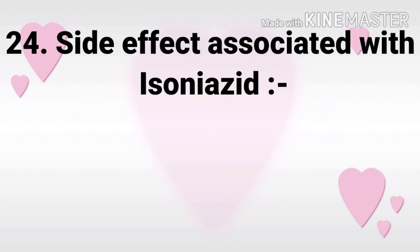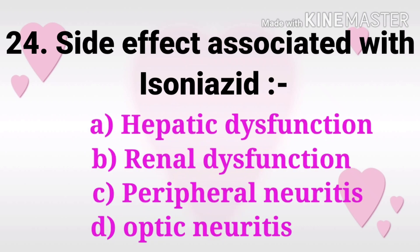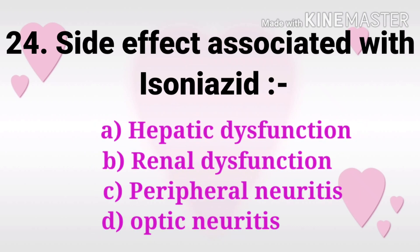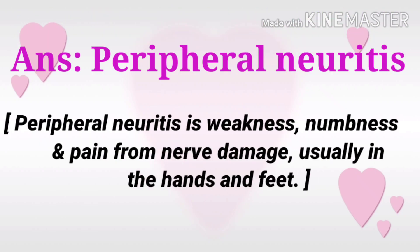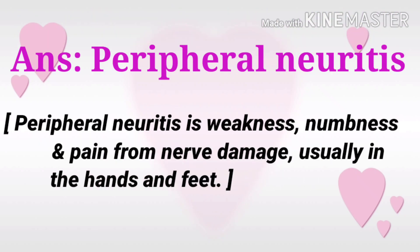Question 24: Side effect associated with isoniazid? The options are hepatic dysfunction, renal dysfunction, peripheral neuritis, and optic neuritis. The answer is peripheral neuritis. Peripheral neuritis is weakness, numbness, and pain from nerve damage, usually in the hands and feet.